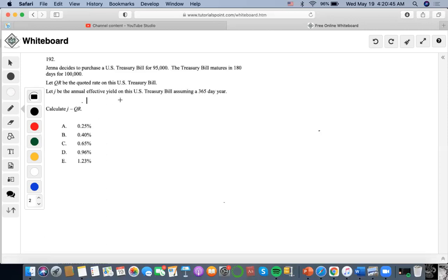So basically, what they mean by this is that since Jenna decides to purchase $95,000, it's going to mature. It says that the Treasury bill is going to mature in 180 days for $100,000, and that the J annual effective yield is assuming a 365-day year.